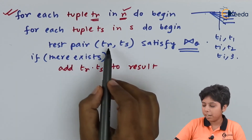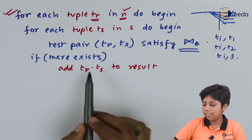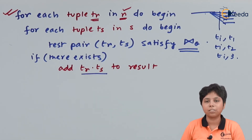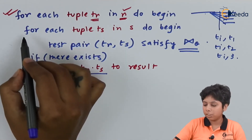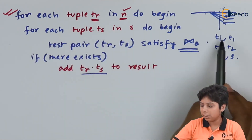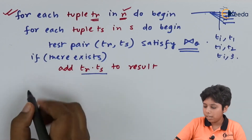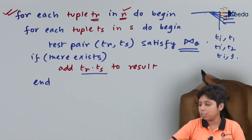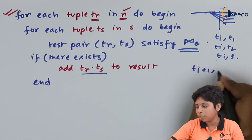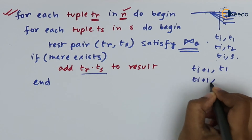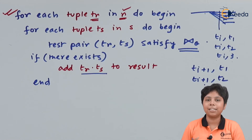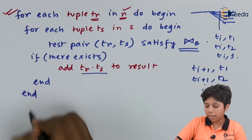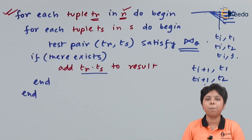If there is a pair tr, ts that satisfies the theta join, then we add tr joined with ts — that is the pair — to the result set. It checks ti t1, ti t2, ti t3, then ends, and starts with ti+1 t1, ti+1 t2, and so on, until it has finished with every tuple in the outer relation. Then the outer loop also ends. In this way we perform nested loop join in an SQL query.